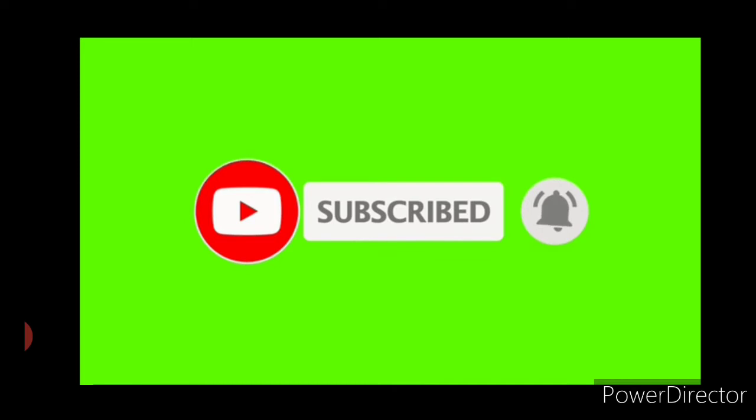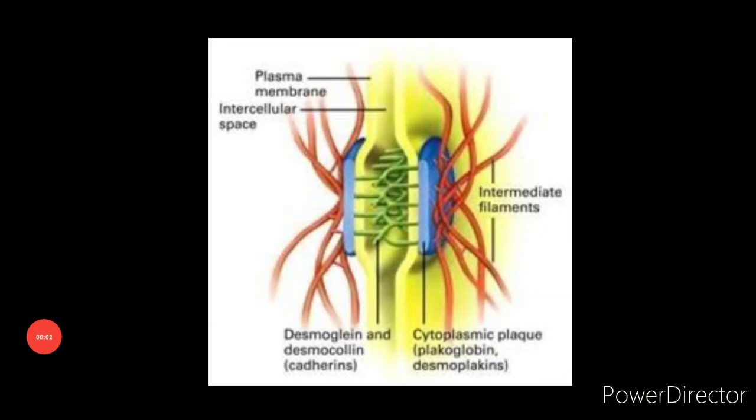Spot desmosomes connect the cytoskeleton of adjacent cells, while hemidesmosomes connect epithelial cells to basement membrane. Proteins called cadherins, transmembrane glycoproteins, create a critical link. A variety of attachment proteins link the short cytoplasmic end of the cadherin to intermediate filaments in the cytoskeleton.